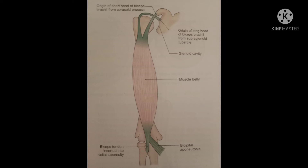From the medial side, a very strong fibrous extension runs medially and fuses with the deep fascia of the forearm, known as the bicipital aponeurosis. Under the bicipital aponeurosis, the brachial artery, median nerve, and median cubital veins lie.